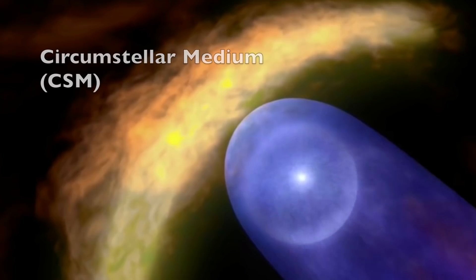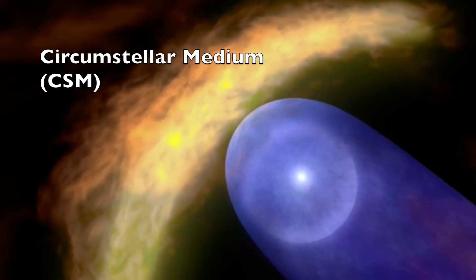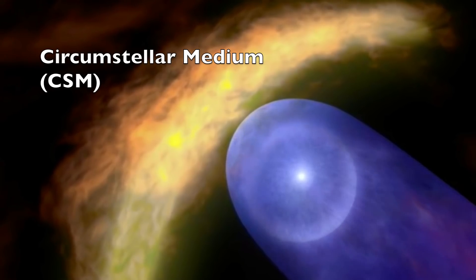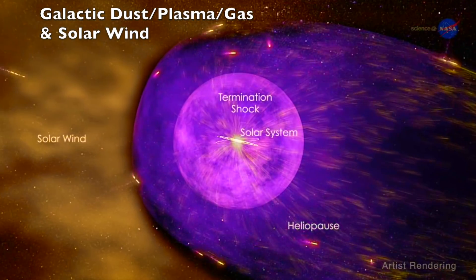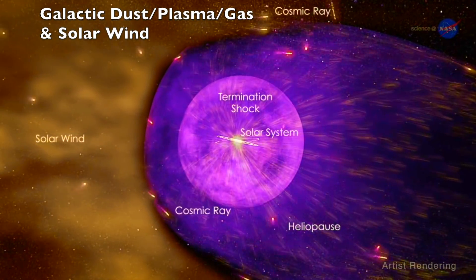At our Sun we call that the heliosphere, but at others we call it the astrosphere, and the circumstellar medium, the region just outside of that, is a dense halo of solar wind plasma mixing with the dust, gas, and plasma from the galaxy.